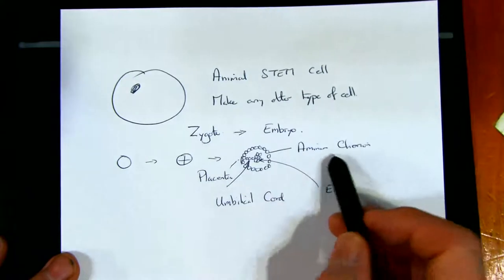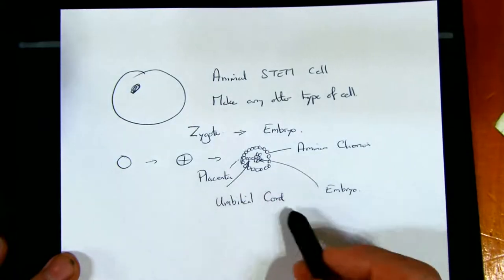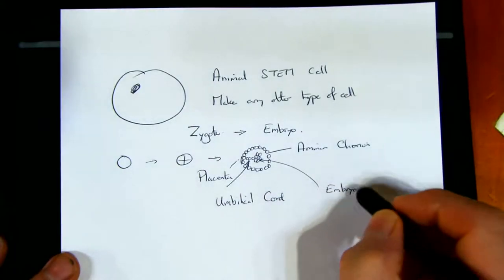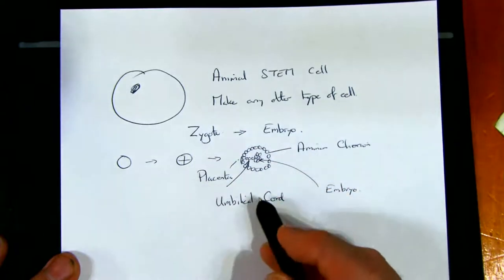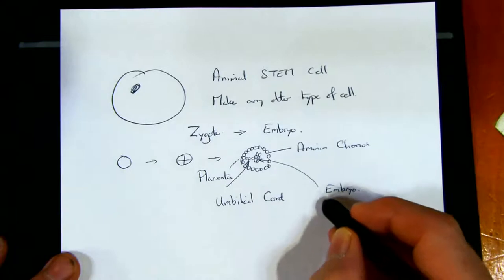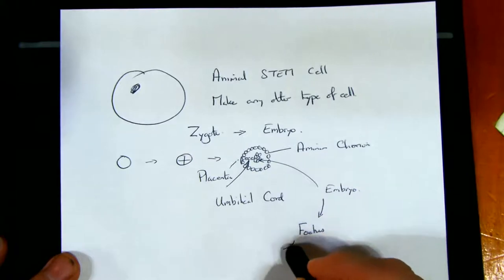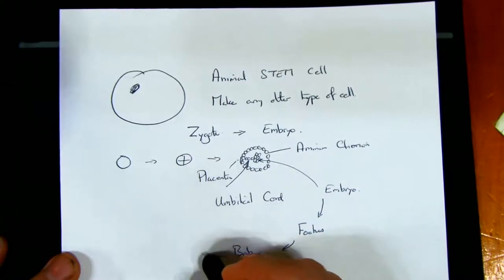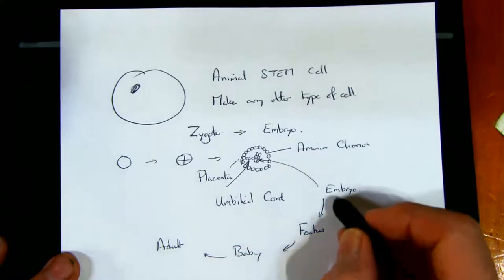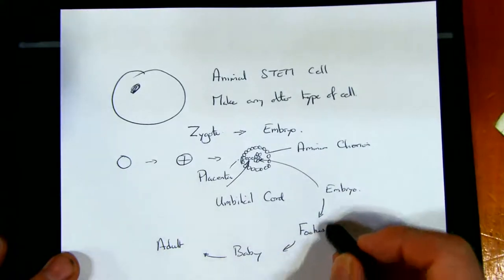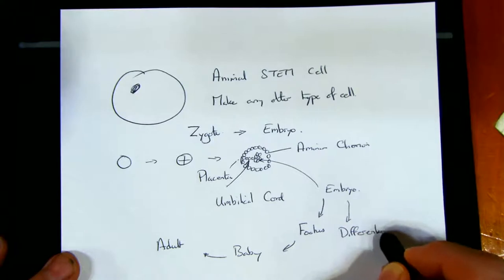The bunch of cells in the middle will form the embryo. The embryo doesn't need to form the amnion, chorion, umbilical cord, or placenta — those have been done. So the embryo has switched off some of the genes needed in the zygote. As the embryo progresses to a fetus, to a baby, and to an adult, more and more genes are switched off — and that is this differentiation.